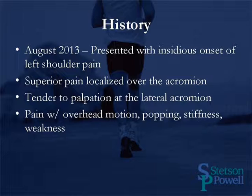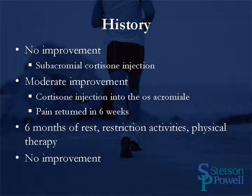In August of 2013, he presented again with an insidious onset of left shoulder pain. He had superior pain localized over the acromion. Upon physical examination, he was tender to palpation at the lateral acromion. He also had pain with overhead motion, popping, stiffness, and associated weakness of the left shoulder. He had no improvement with the subacromial cortisone injection; however, he had a moderate amount of improvement when he had the cortisone injection into the os acromiale. However, the pain returned in approximately six weeks after the injection. After six months of rest, restriction of activities, and physical therapy, he had no significant improvement in the pain of the left shoulder.